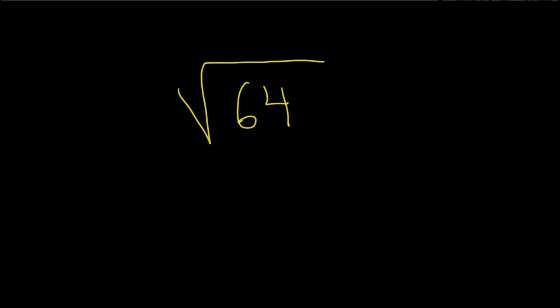In this problem, we're being asked to find the square root of 64. So first note, if you take 8 and you square it, you do get 64. And so what this means is that 8 is a square root of 64. That's what that means, it's a square root of 64.